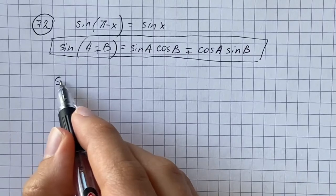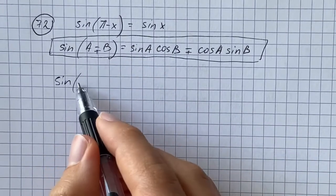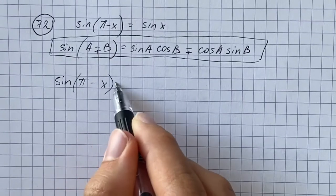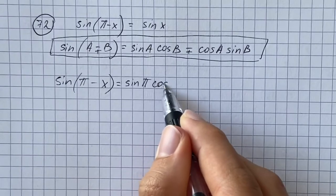We substitute pi instead of a and x instead of b. That's going to be sine of pi minus x, and that's going to be sine of pi times cosine of x minus cosine of pi times sine of x.